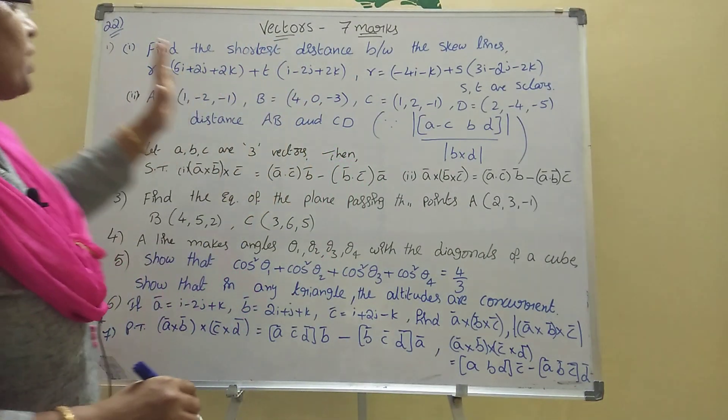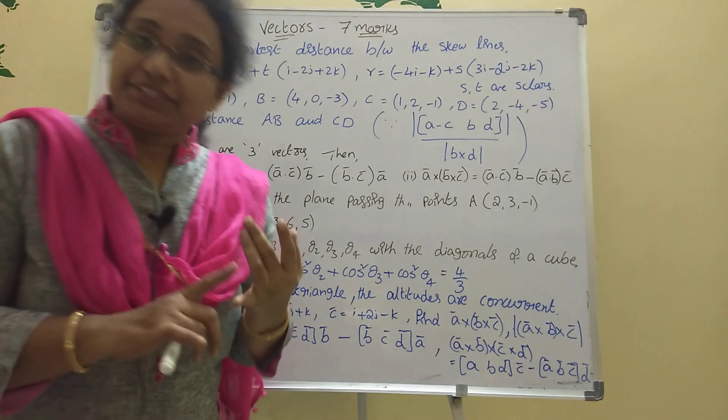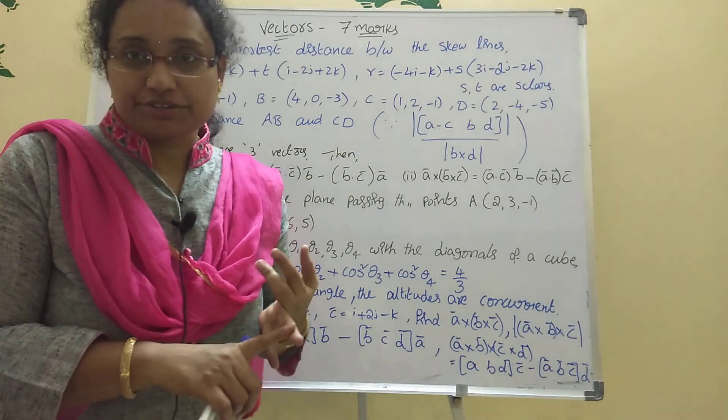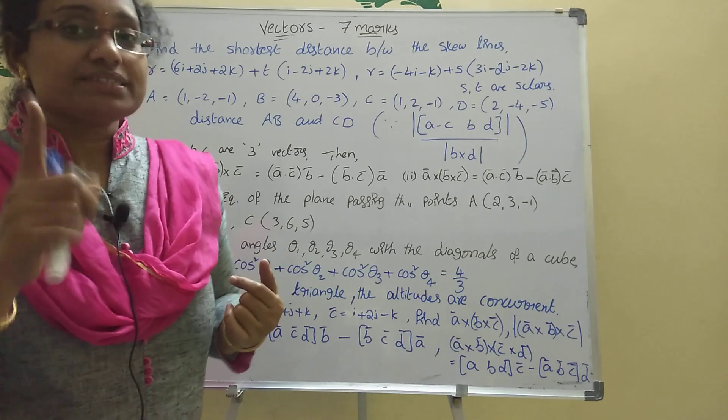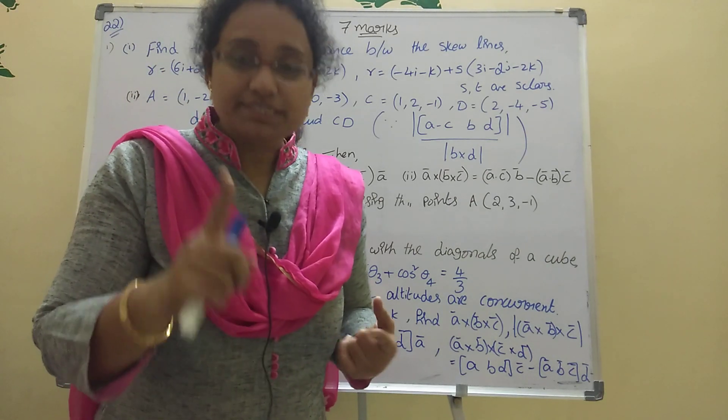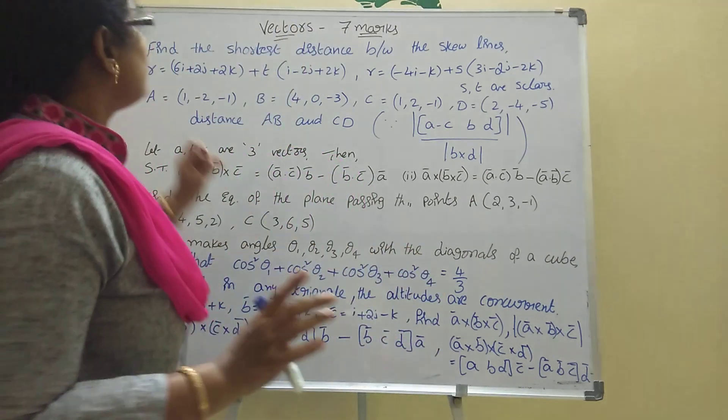Today's vectors 7 marks problems - I told you there are two types: addition of vectors and product of vectors. In the product of vectors, one 7-mark question will come.